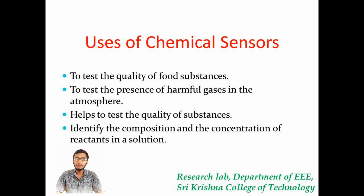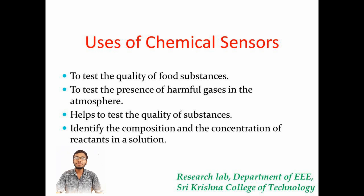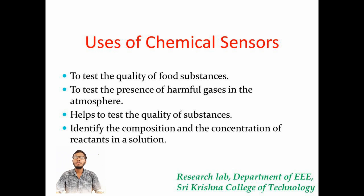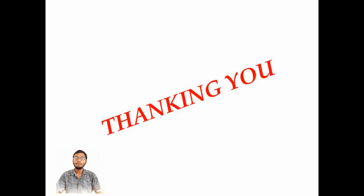There are different uses and applications of chemical sensors. We can detect food quality by sensing the level of chemicals in food substances. We can also detect the presence of harmful gases in the atmosphere. Chemical sensors are useful to test the quality of substances by identifying their composition, concentration, etc. The applications are found in chemical industries, food maintaining industries and other home appliances.